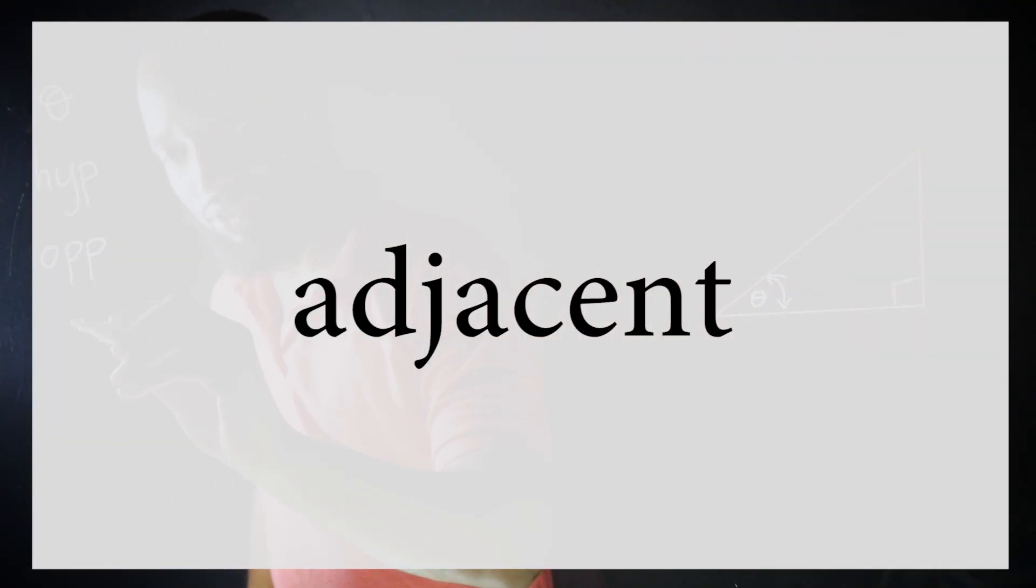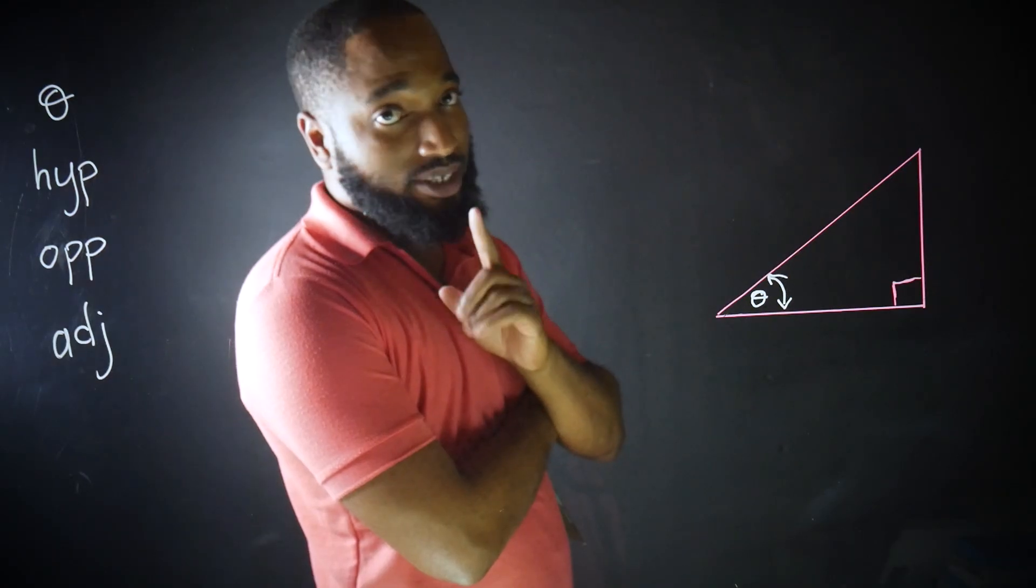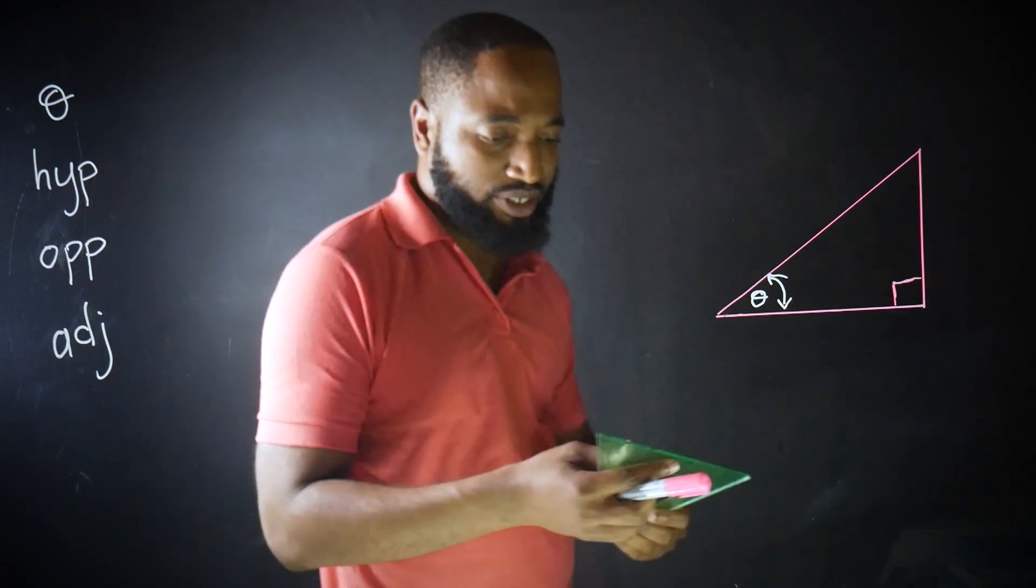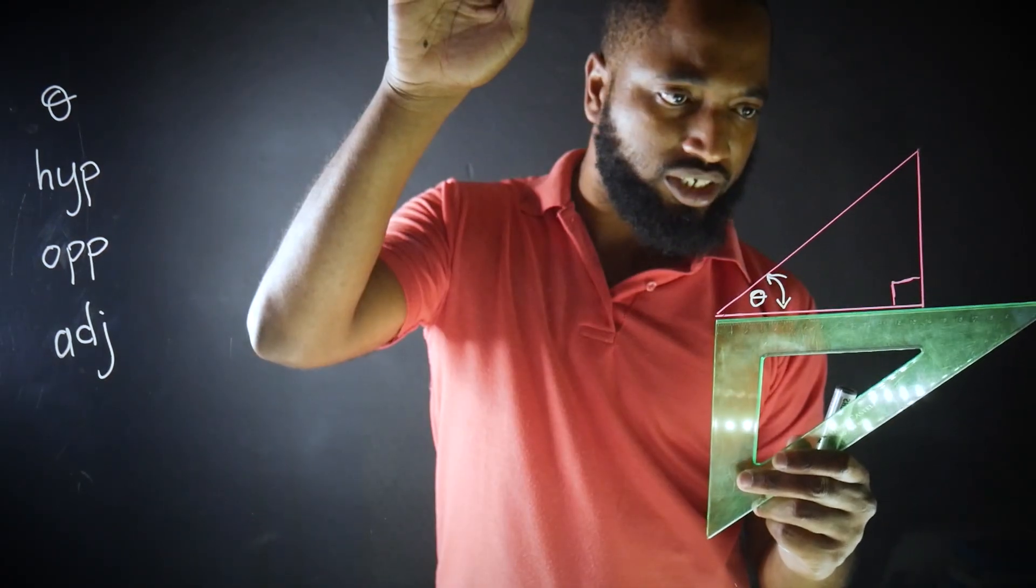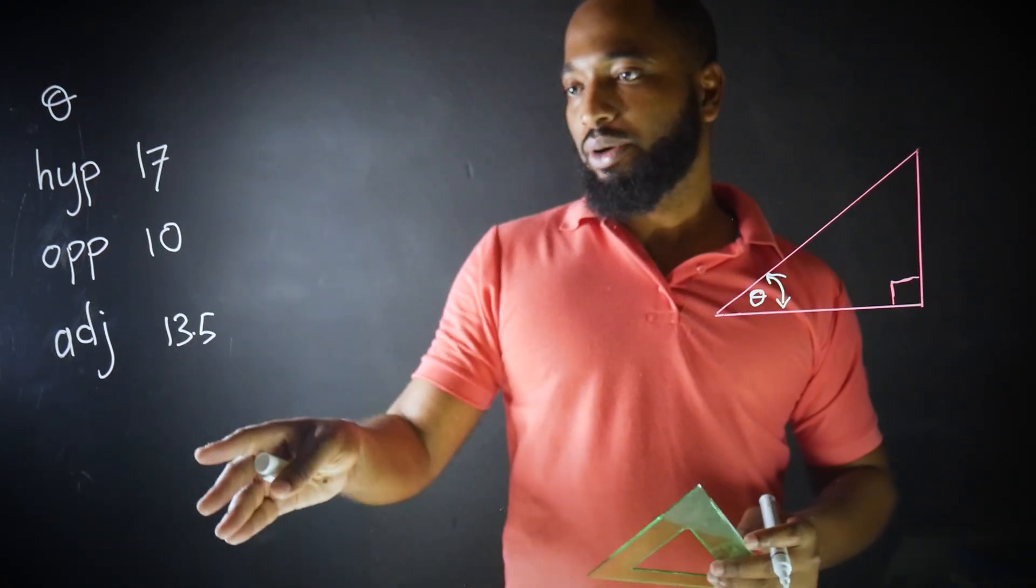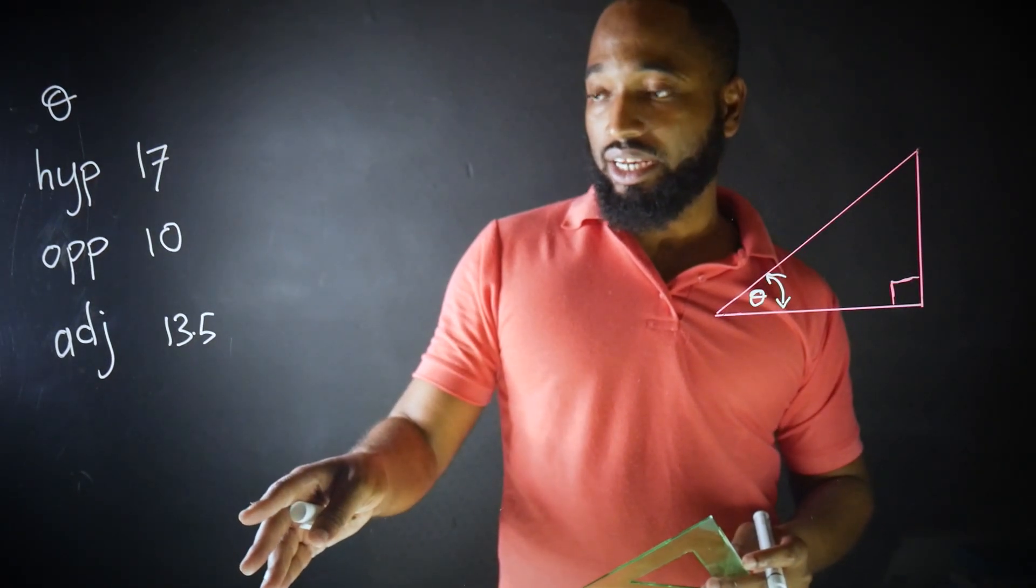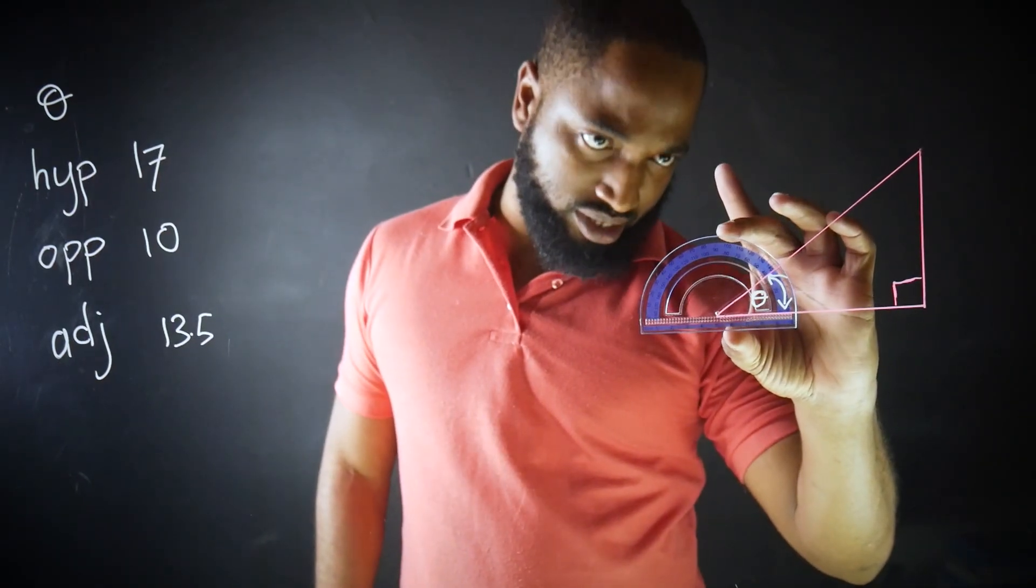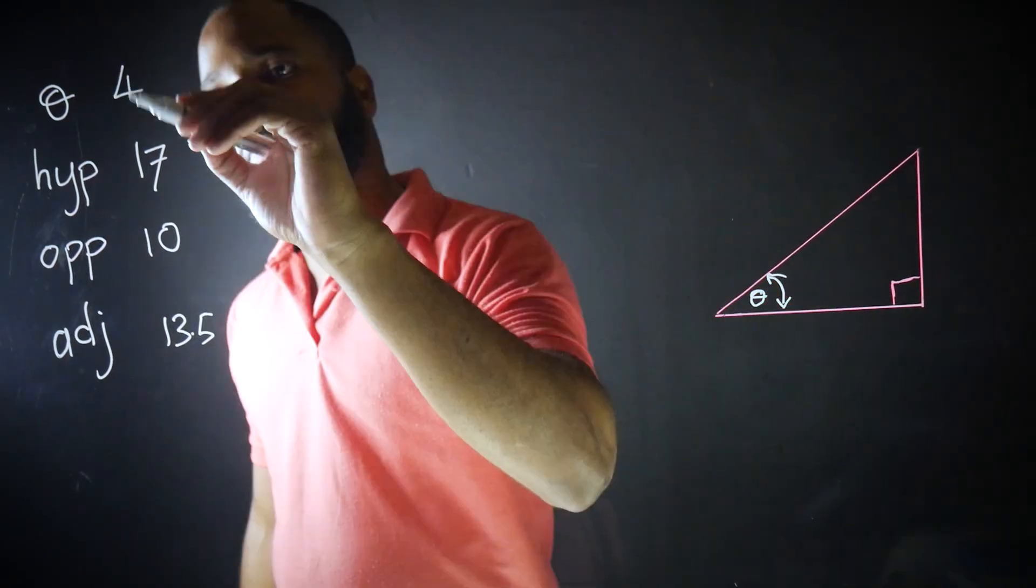Now let's explain something you may not have noticed before. Let me measure the adjacent, opposite, and hypotenuse. These are the approximate lengths in centimeters of each side. The angle theta is approximately 40 degrees.